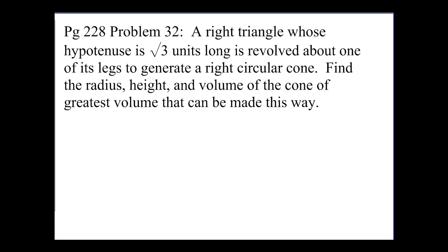The problem states that a right triangle whose hypotenuse is the square root of three units long is revolved about one of its legs to generate a right circular cone. Find the radius, height, and volume of the cone of greatest volume that can be made this way.